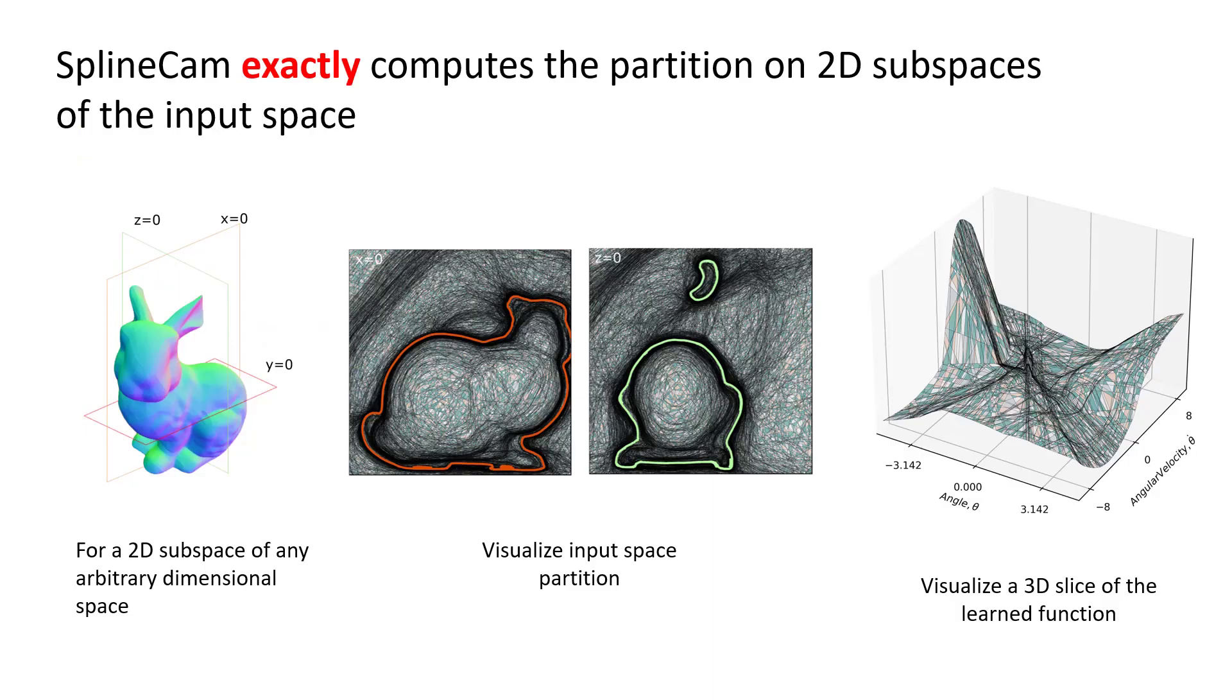SplineCam is the first method to exactly compute these folds or partitions formed by a neural network on arbitrary 2D subspaces of the input space.